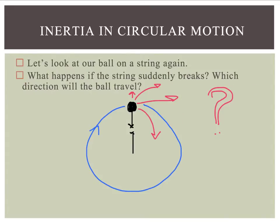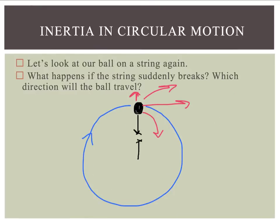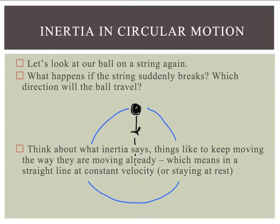Let's look at our ball on a string again. What happens if the string suddenly breaks? What direction will the ball travel? Will it go straight out, go in a curved path along the tangent, or will it curve in? We need to remember what direction the force is — centripetal force is inward. So if that suddenly stops, we need to think about what inertia says. Things like to keep moving the way they are already moving, which means for a ball going in a circle, we have that tangential velocity. That is the direction the ball is moving in that instant, but it's the centripetal force that causes it to change direction. So the ball will keep going in a straight line after this force ceases to act on it.